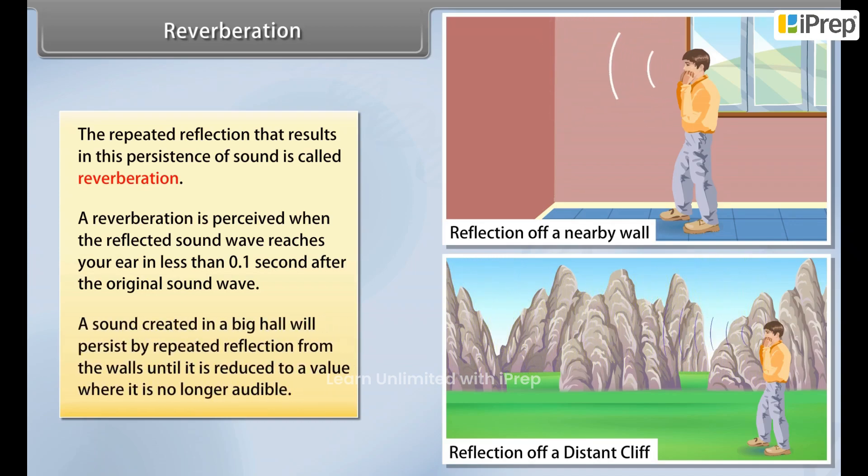For example, a sound created in a big hall will persist by repeated reflection from the walls until it is reduced to a value where it is no longer audible.